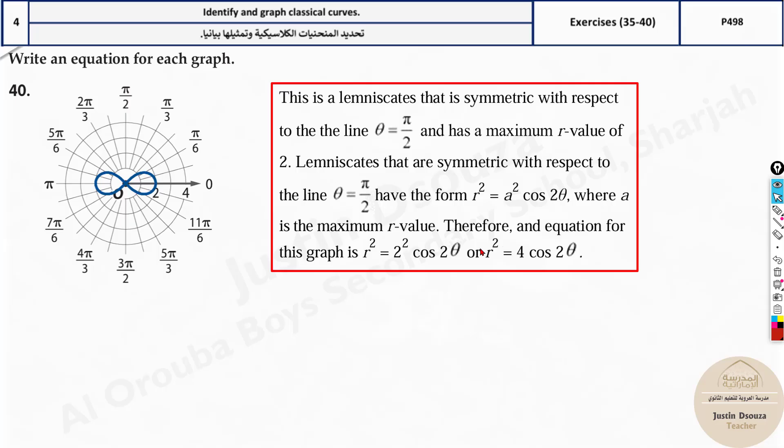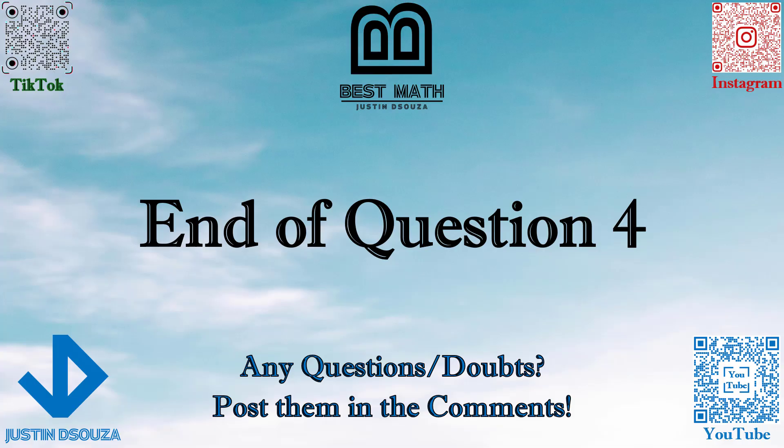Over here, remember for lemniscate you have to always take the square root. That is the end of this question. I hope it is clear. If you have any doubts, please consider re-watching the video or posting your doubts in the comments. I hope you all will head on to the next video.